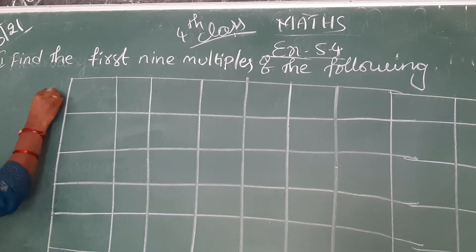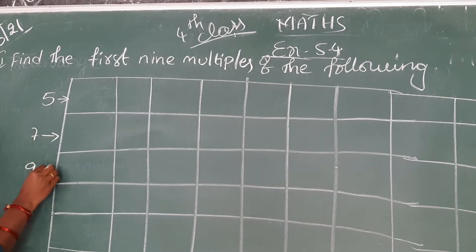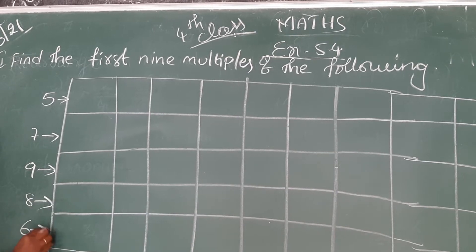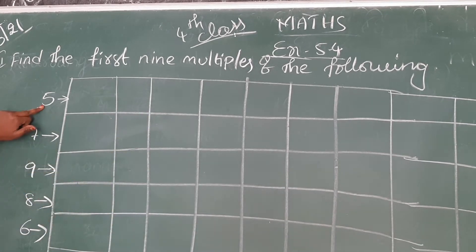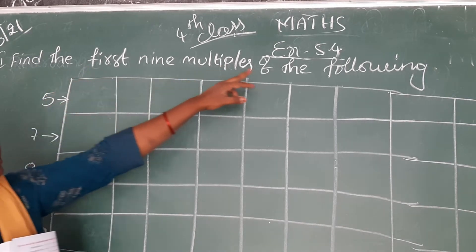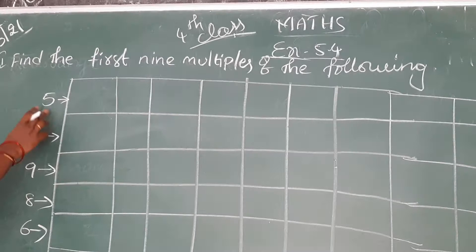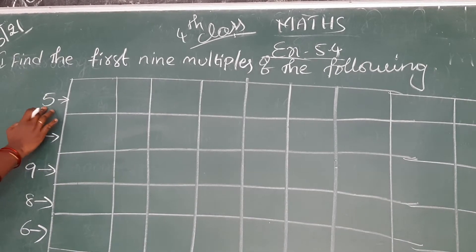Here given numbers 5, 7, 9, 8, 6, 3. So how you have to fill this table? First number what? 5. What is asking here? Find the first 9 multiples of the following. You have to write the multiples of this number, means tables. 5 table you have to write.